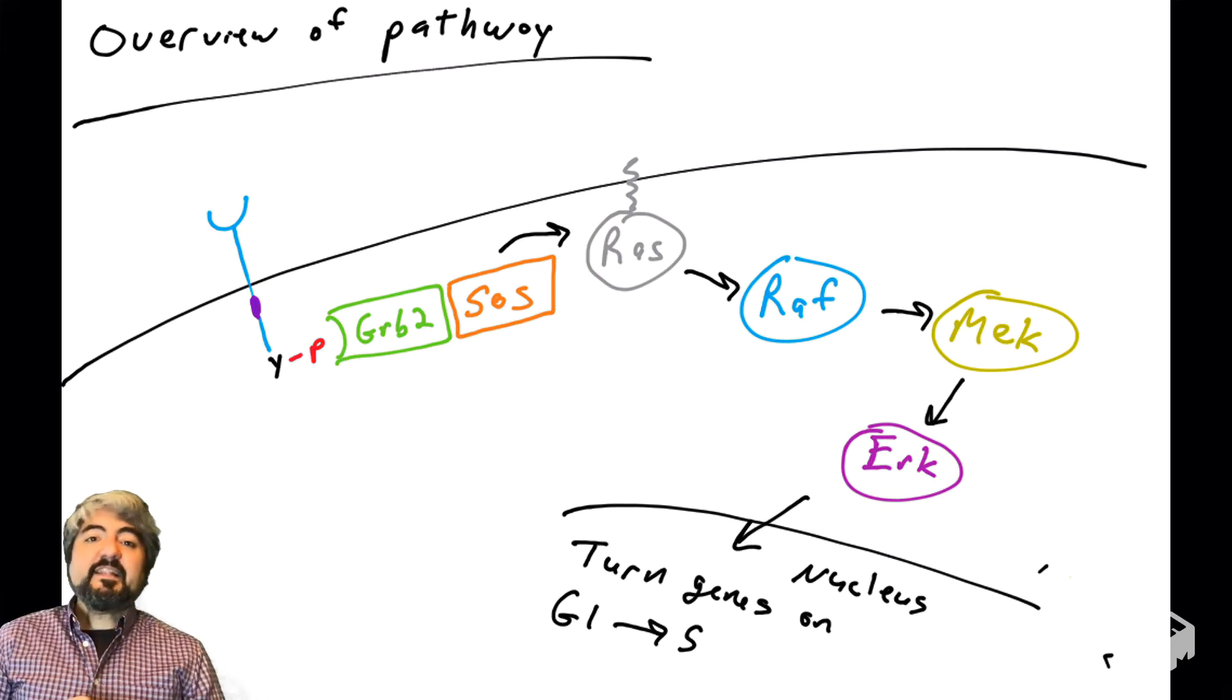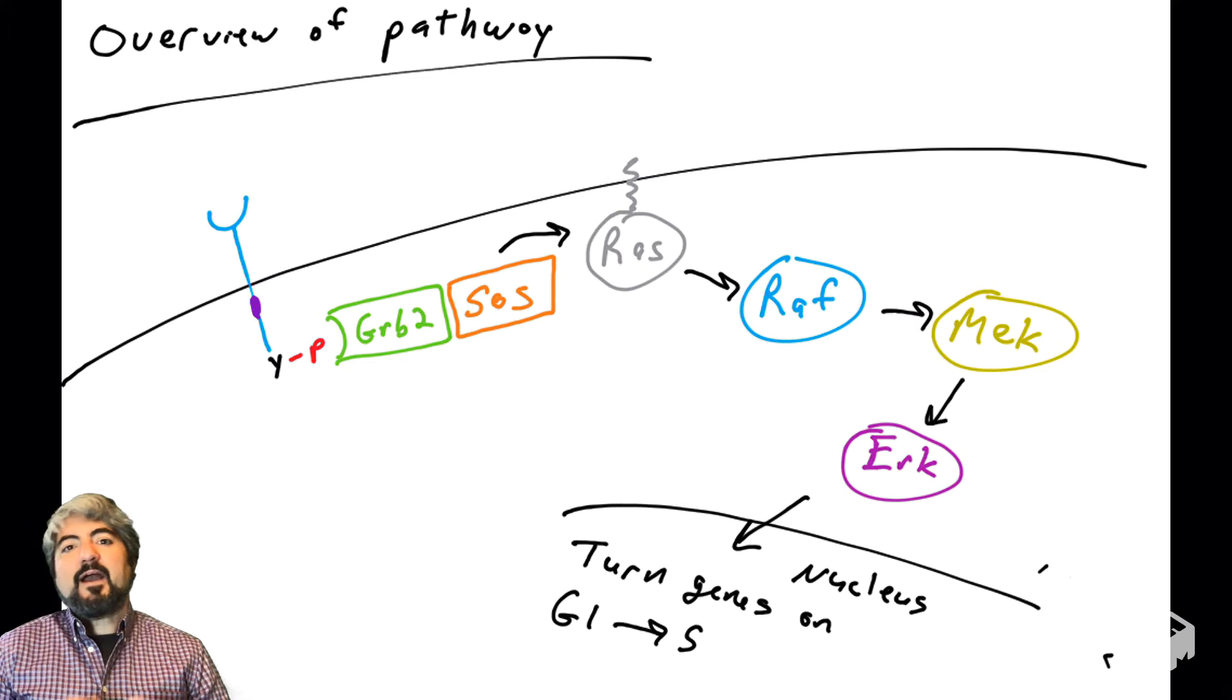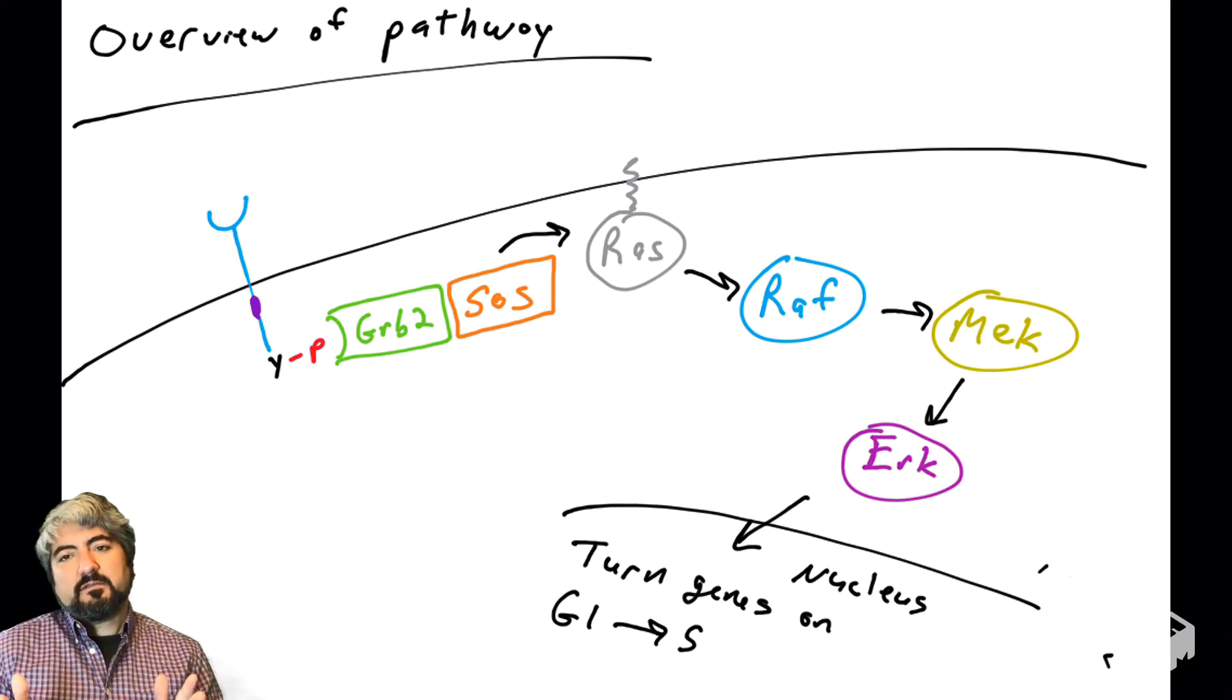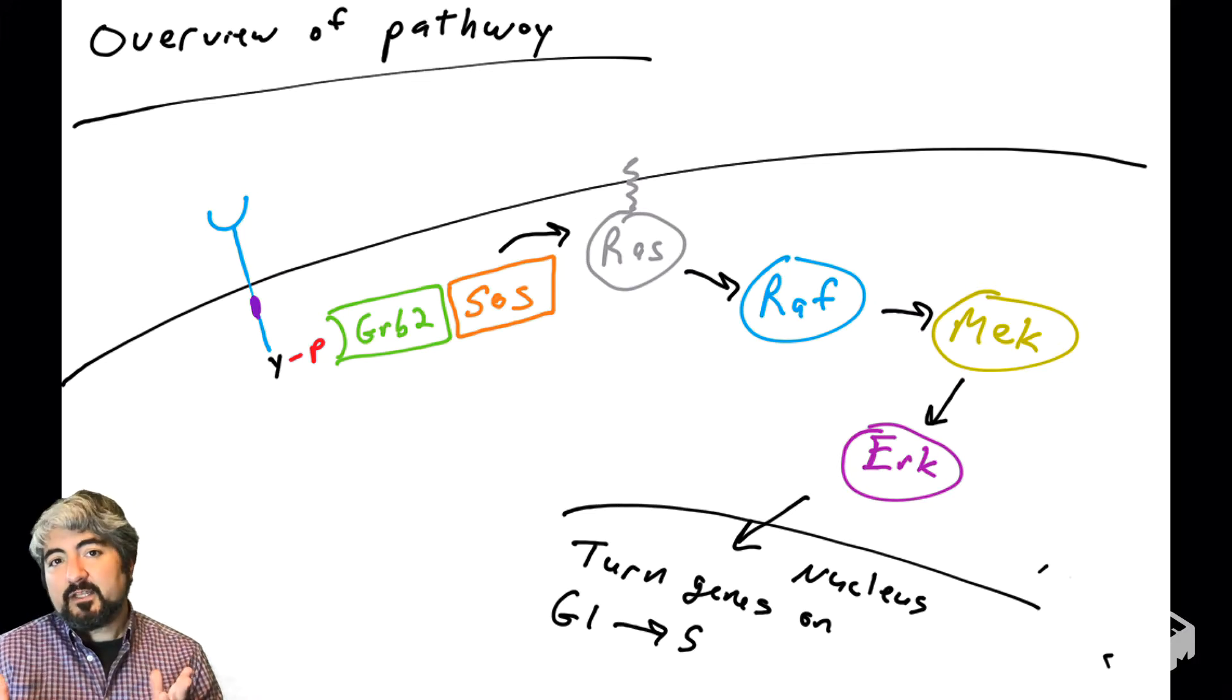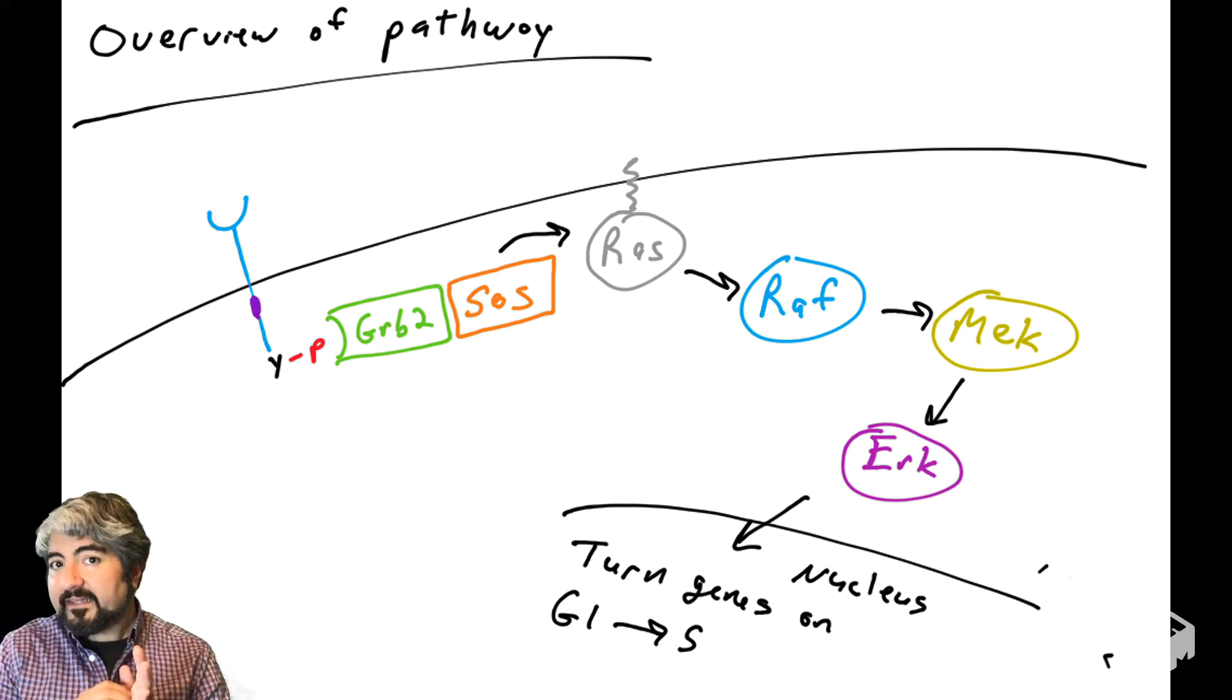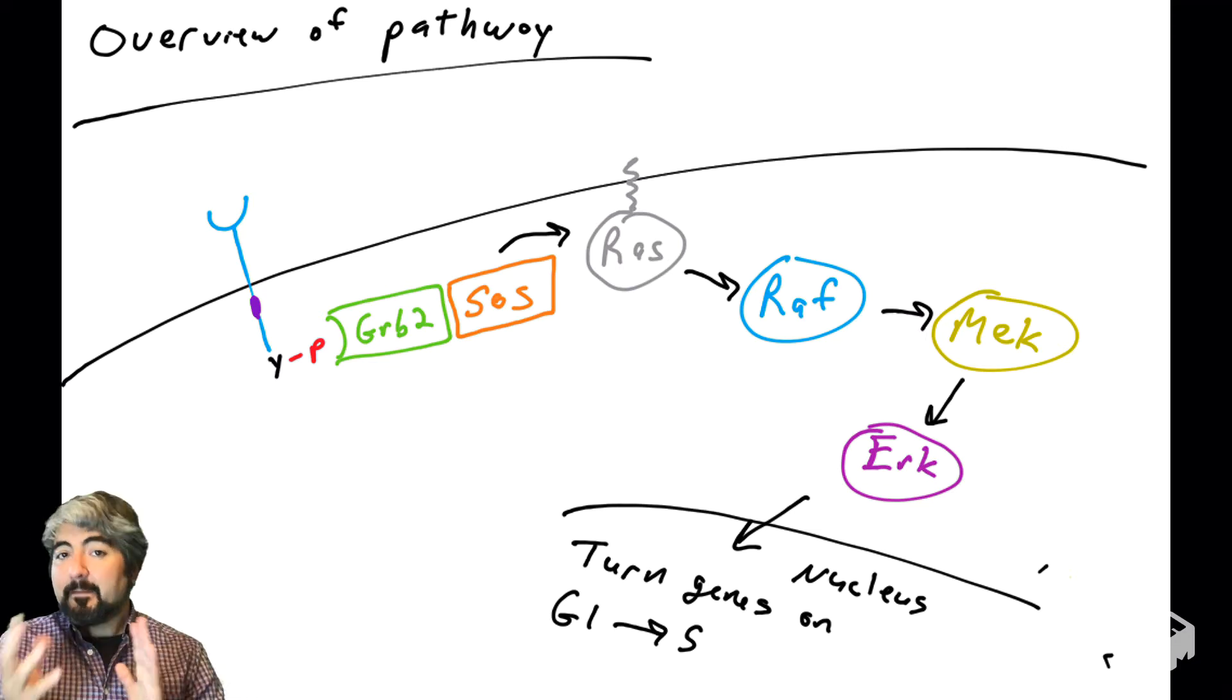In this video, we're going to talk about RAS. RAS is an extremely important protein that controls the proliferation of many human cells. It is commonly mutated in many human cancers, and scientists are trying to figure out if they can design drugs that target RAS to help stop cancer cells from growing.